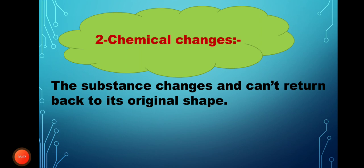Now let's study chemical changes. In chemical changes, the substance or the matter can change and can't be reversed again — the matter can't return back to its original shape. In chemical changes, we can't restore the shape of the matter again.